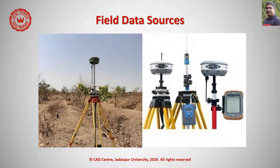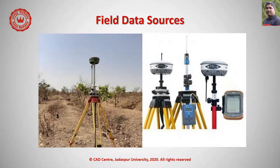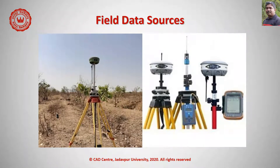Traditional manual surveying techniques using chains, plane tables, levels, and theodolites are examples of direct field measurement. Modern digital equivalents of these manual techniques have been adopted so that data are collected and stored in digital format, ready for direct input into GIS. Examples include total stations and handheld laser range finders.